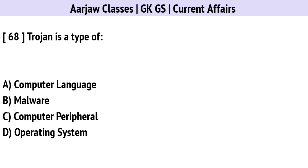Trojan is a type of? The correct option is B: Malware.